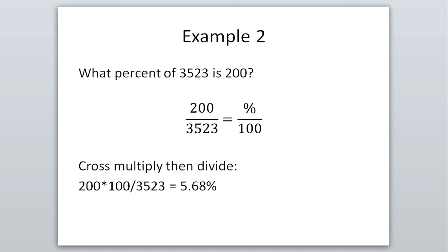So we have 200 over 3,523 equals percent over 100. The percent is the only unknown, so we solve by cross multiplying and dividing: 200 times 100 divided by 3,523 gives us 5.68%. So if you were trying to save $3,523 for a vacation and already had $200 in the bank, you would have saved 5.68% of what you needed.